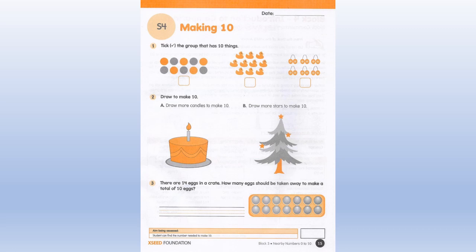Take out your workbook, page number 15. On top right, write today's date. 1st question: tick the group that has 10 things — count how many are there and tick the group with 10 things inside the box. 2nd question: draw to make 10. Draw more candles to make 10; there is only 1 candle, so draw the remaining candles to make 10. Next, you can see 3 stars — draw the remaining stars to make 10. 3rd question: there are 14 eggs in a crate; how many eggs should be taken away to make a total of 10? Put a cross mark on the extra eggs and write how many should be taken away.